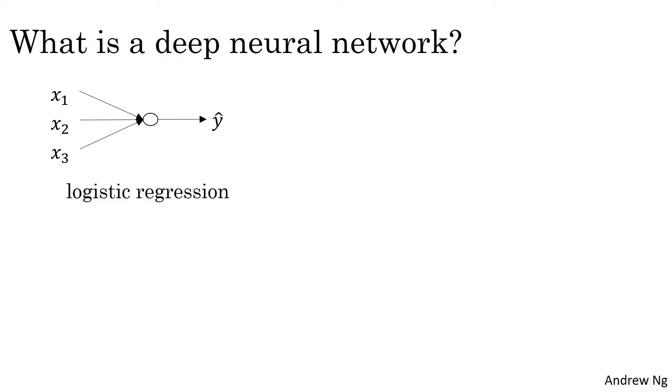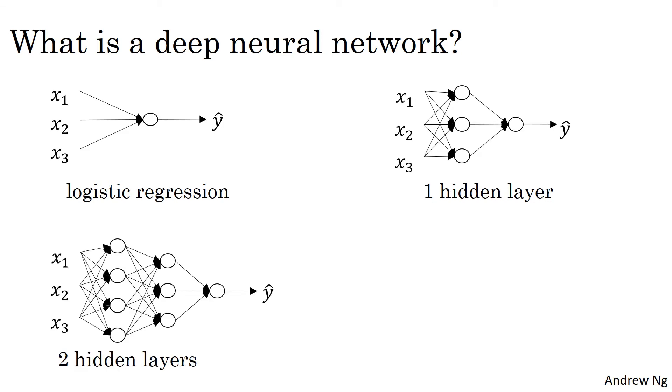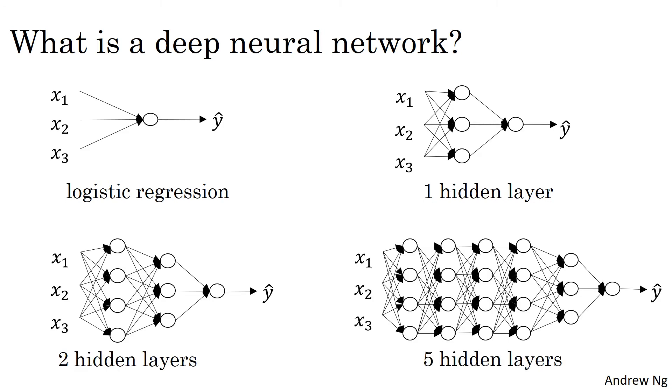So what is a deep neural network? You've seen this picture for logistic regression, and you've also seen neural networks with a single hidden layer. Here's an example of a neural network with two hidden layers, and a neural network with five hidden layers. We say that logistic regression is a very shallow model, whereas this model here is a much deeper model, and shallow versus depth is a matter of degree.